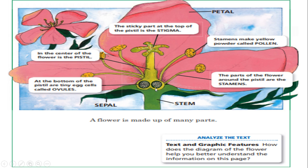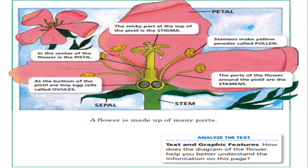At the bottom we find the ovules, on top of that the pistil, and on top of that the sticky part called the stigma. Over here we find the pollen, held by the stamens. Now, analyze the text and graphic features: how does the diagram of the flower help you better understand the information on this page? If I just said 'stigma,' you wouldn't know what it is. The illustration helps us understand new scientific vocabulary and the information in the text.